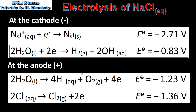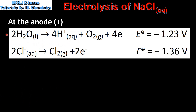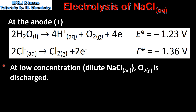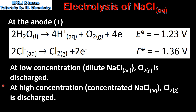At the anode there are two possible reactions: the oxidation of water to form oxygen gas, and the oxidation of chloride ions to form chlorine gas. Whether we get oxygen gas or chlorine gas produced at the anode depends on the concentration of the sodium chloride solution. At low concentration, which is a dilute sodium chloride solution, oxygen gas is discharged. At high concentration, which is a concentrated sodium chloride solution, chlorine gas is discharged.